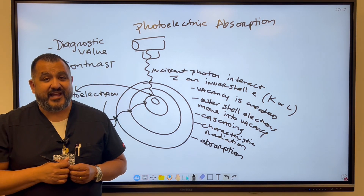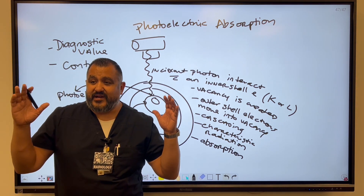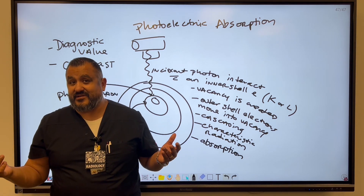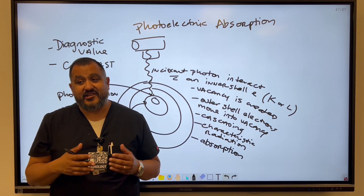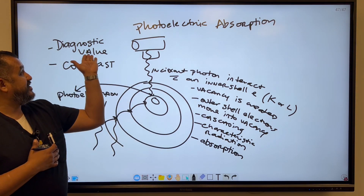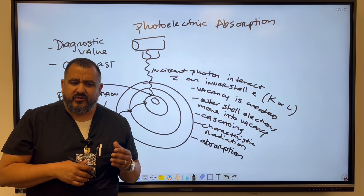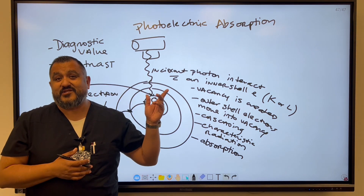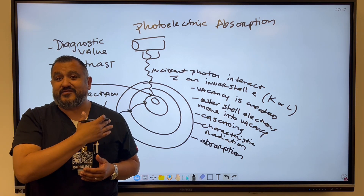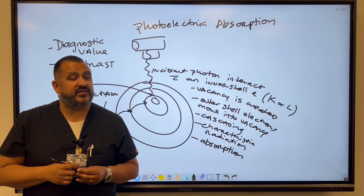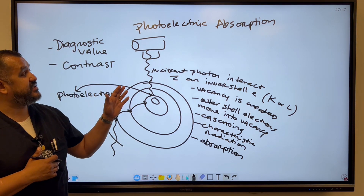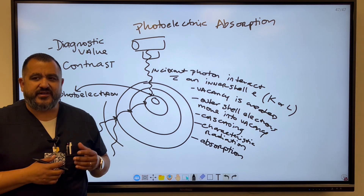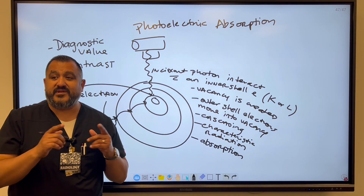The number one interaction throughout the diagnostic range of x-ray is Compton, and the number one source of Compton interactions is the patient. Photoelectric is good because it gives us diagnostic value — contrast. Most absorption of energy is through the photoelectric effect, so most patient dose results from the photoelectric effect. I'm hoping this helps you understand the difference between photoelectric and Compton — hitting all the key terms.